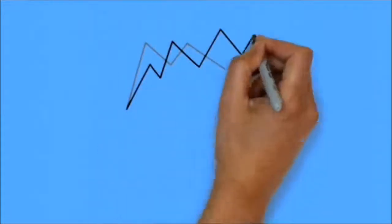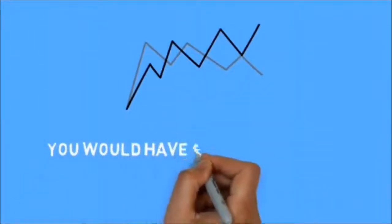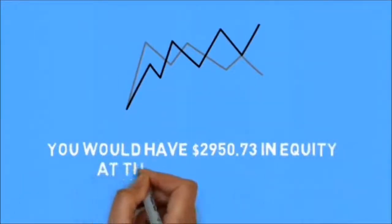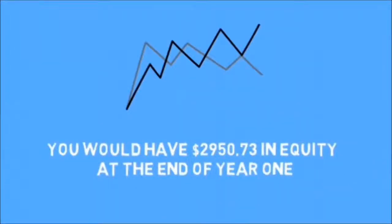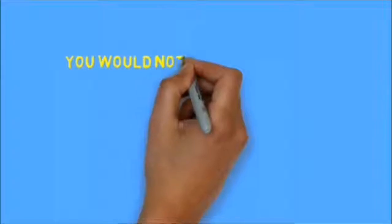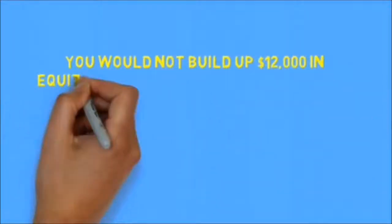If we were to disregard market price fluctuations and simply look at the charts for a standard 5%, 30-year fixed rate mortgage on a $200,000 home, you would have $2,950.73 in equity at the end of year one. You would not build up $12,000 in equity until the end of the 46th month.